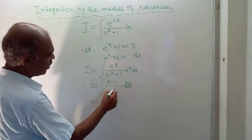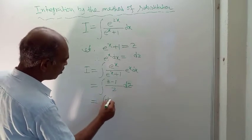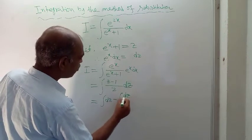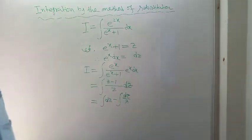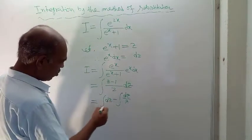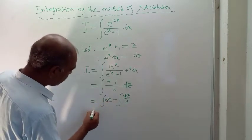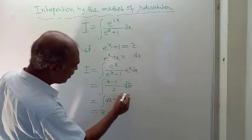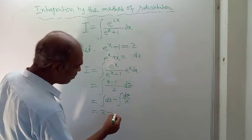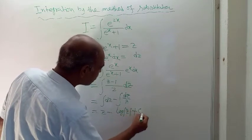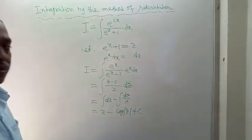So z over z is 1, giving us the integration of dz minus the integration of dz over z. The integration of dz is z, and the integration of dz over z is log of mod z, plus a constant of integration C.